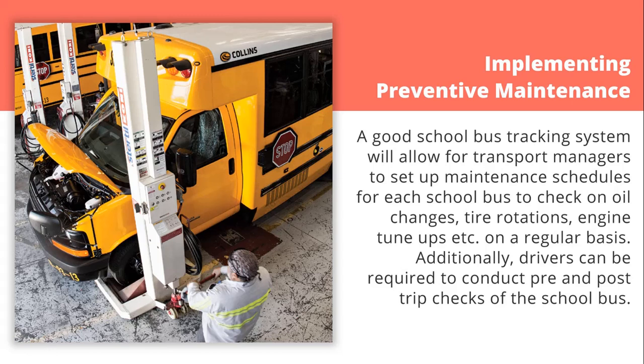Step 9: Implementing preventive maintenance. A good school bus tracking system will allow transport managers to set up maintenance schedules for each school bus to check on oil changes, tyre rotation, engine tune-up, etc. on a regular basis. Additionally, drivers can be required to conduct pre- and post-trip checks of the school bus. Automating or digitising these processes ensures that the driver is carrying out the tasks diligently and not rushing the process. The end result: school buses are always roadworthy and breakdowns or downtime are avoided.